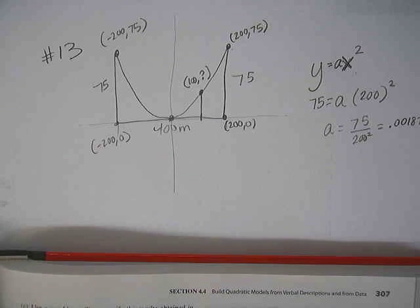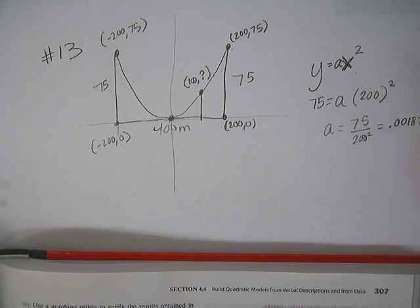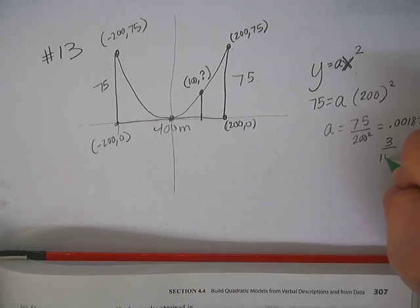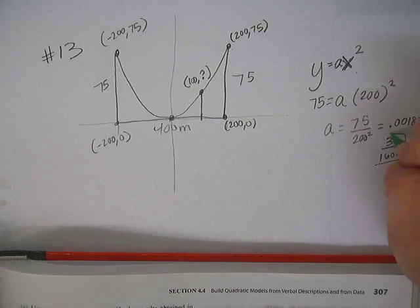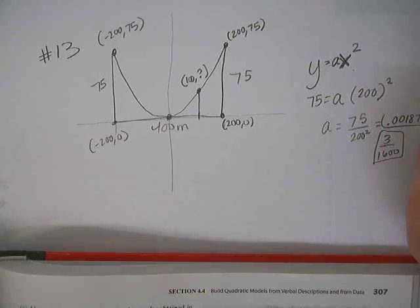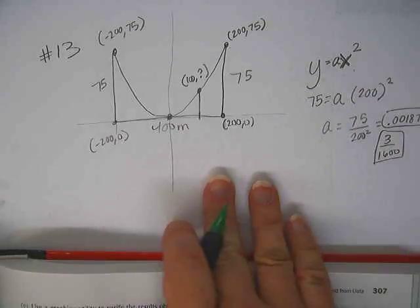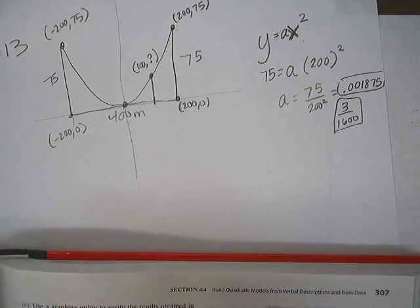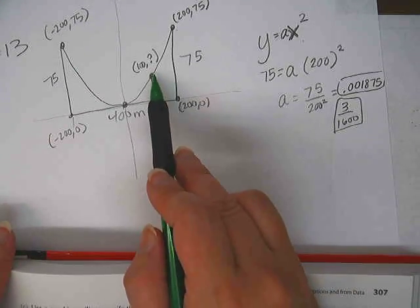I'm going to go ahead and change that to a. Okay, quit out of there. So I'm going to take my answer and change that to a fraction. Because I like fractions better. So 3 over 1600. If you want to use a fraction or this if you want to use a decimal. Okay? Alright.